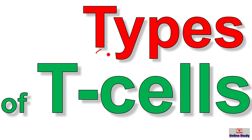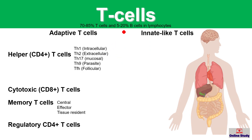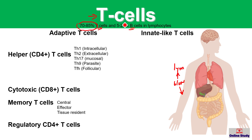Today in this video I am going to show you how many types of T cells exist in immunology. We know that B cells and T cells are the most important lymphocytes in our body. If you take some blood and look at the lymphocytes, 70 to 85 percent are T cells and 5 to 20 percent are B cells. T cells are divided mainly into adaptive T cells and innate-like T cells, depending on how the T cell works.